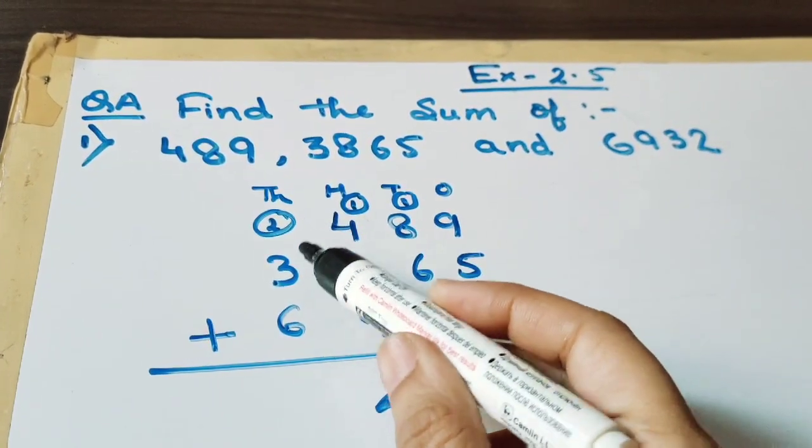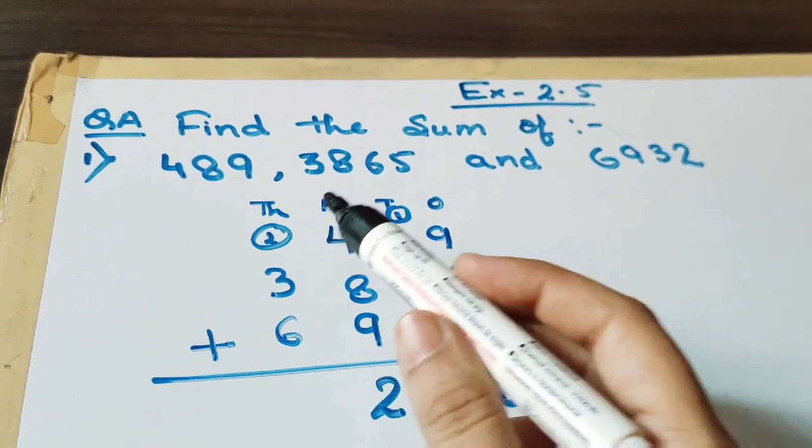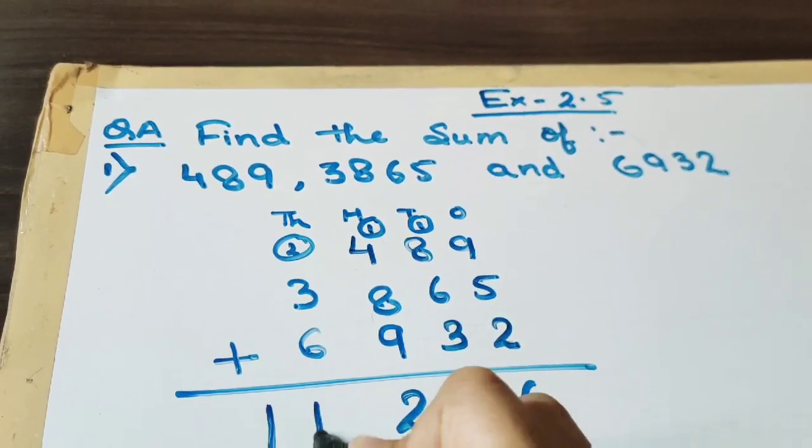6 plus 3 plus 2. That is 11. So I will write here.